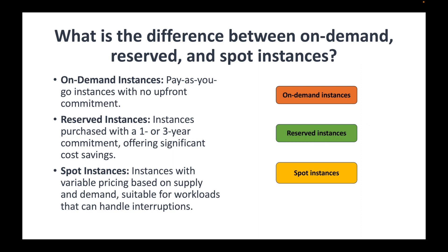Spot instances are spare EC2 instances with variable pricing depending on supply and demand. Amazon offers these at a huge discount, but availability depends on supply and demand — if the supply is there you get the instances, if not you won't. Spot instances are suitable for workloads that can handle interruptions, unlike on-demand or reserved instances where there is a risk your instance gets interrupted when supply is no longer available.